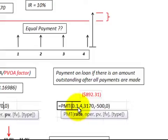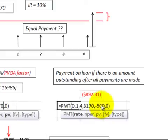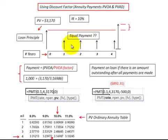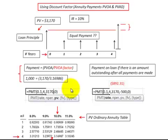Financial calculators and Excel have an advantage over discount factor tables: rather than just using a single discount factor, you can enter the interest rate, number of years, and loan principal, and also account for any outstanding balance at the end of the loan — for example, $500 still outstanding on a four-year loan. These tools give you considerable flexibility. In summary, this shows how to calculate equal annuity payments on a loan using discount factor tables, or more conveniently using Excel or a financial calculator.